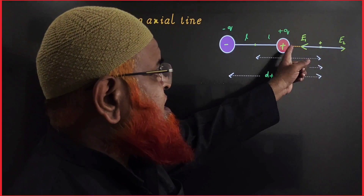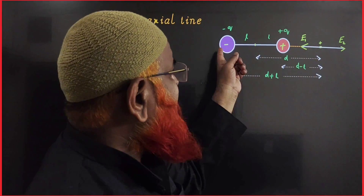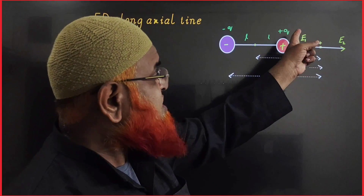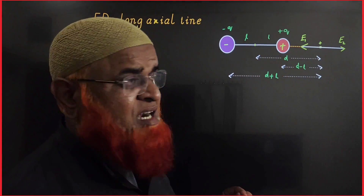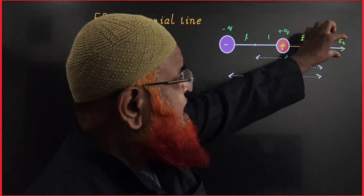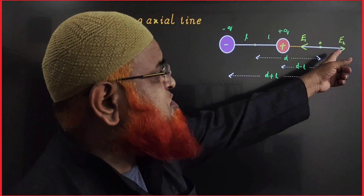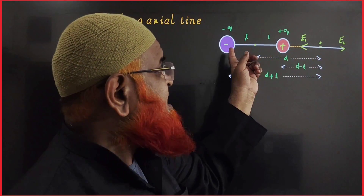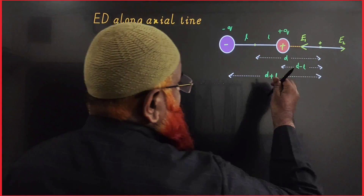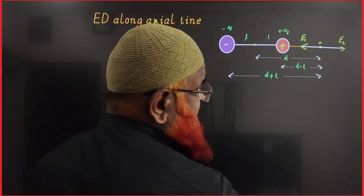When you place a test charge here, the positive charge will repel, and electric field intensity E2 is in this direction. Because of the negative charge there is attraction, and this is taken as electric field intensity E1. Since the negative charge is very far from this point, E1 will be lesser and E2 will be greater. So from the positive charge, the distance is D minus L, and from the negative charge, the distance is D plus L.